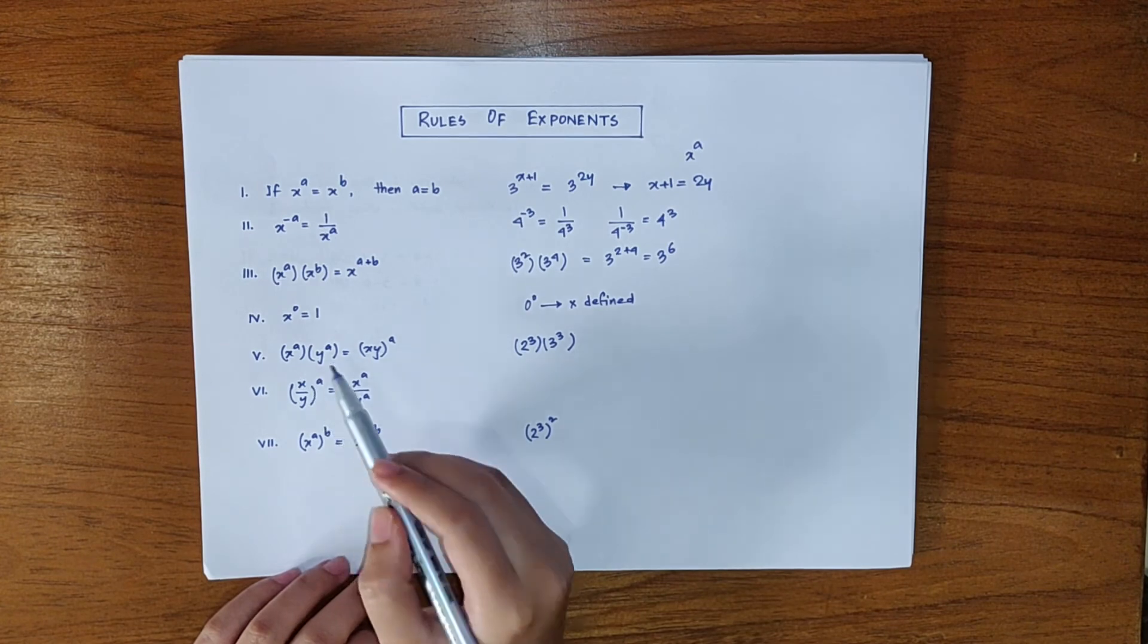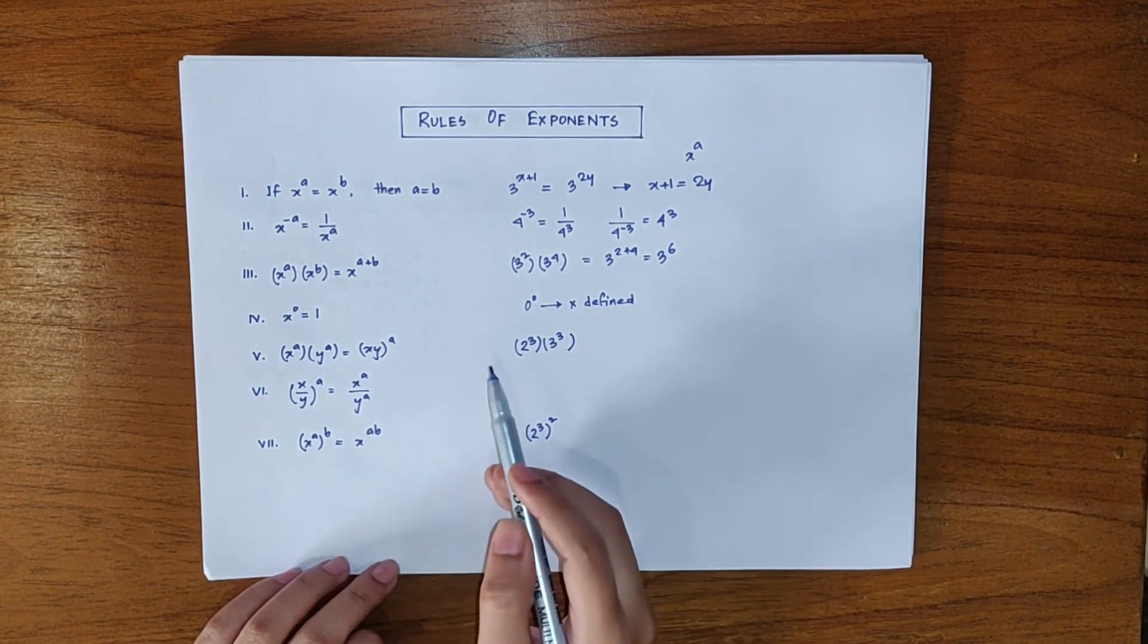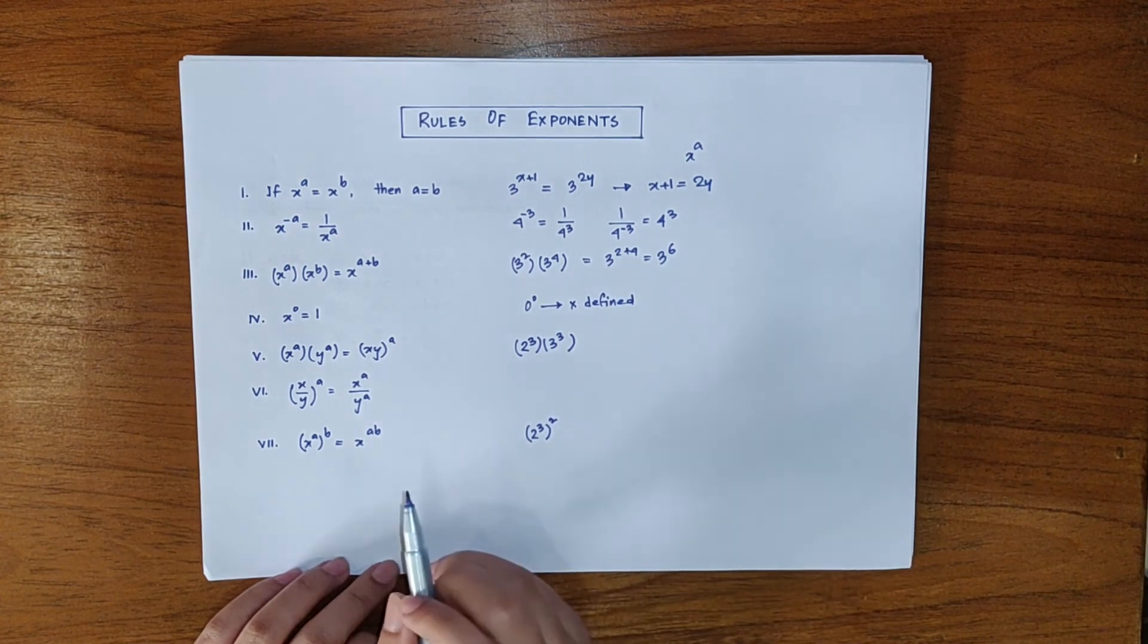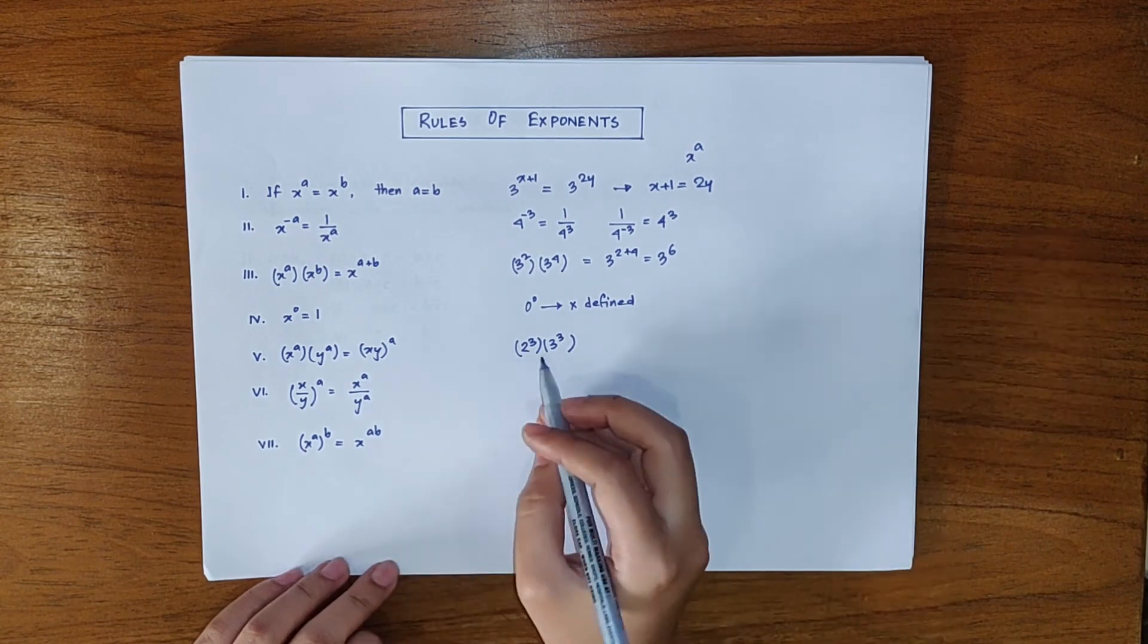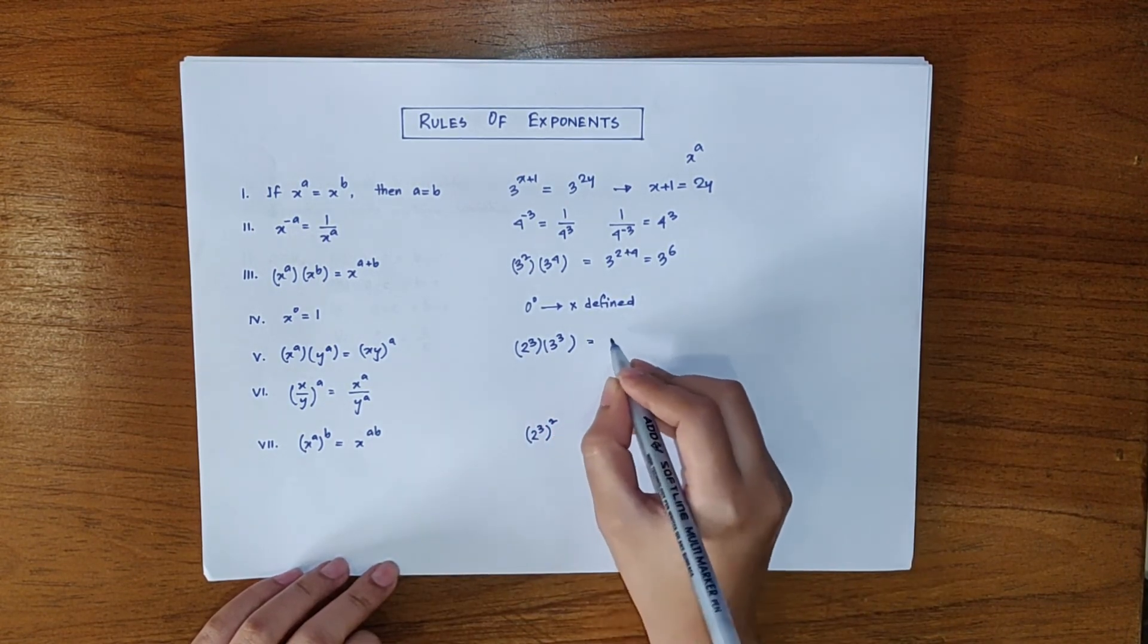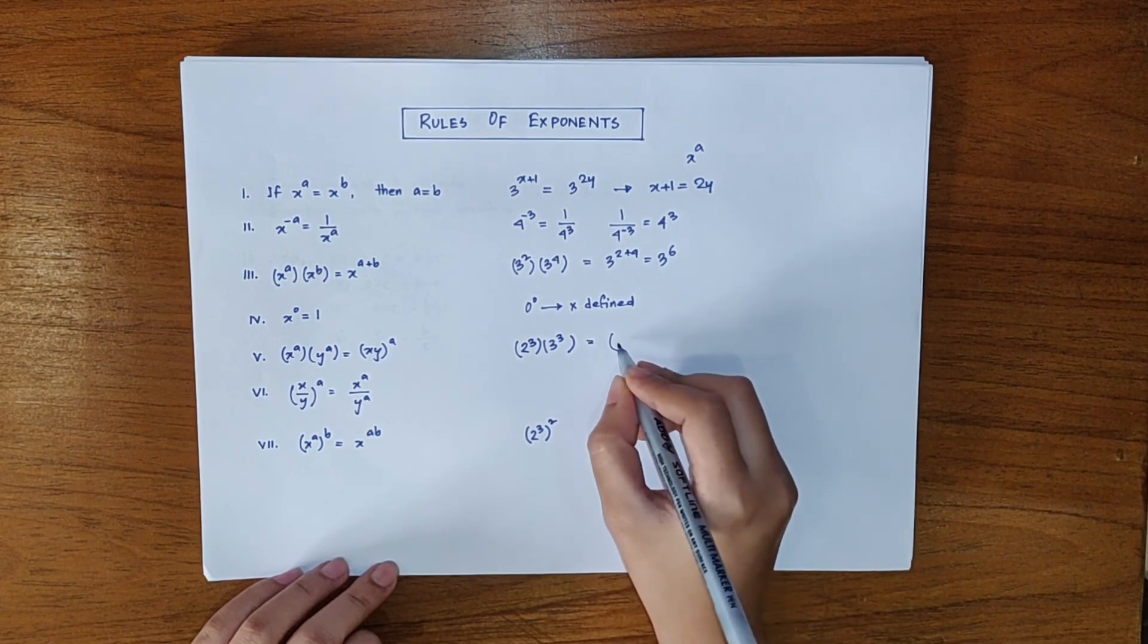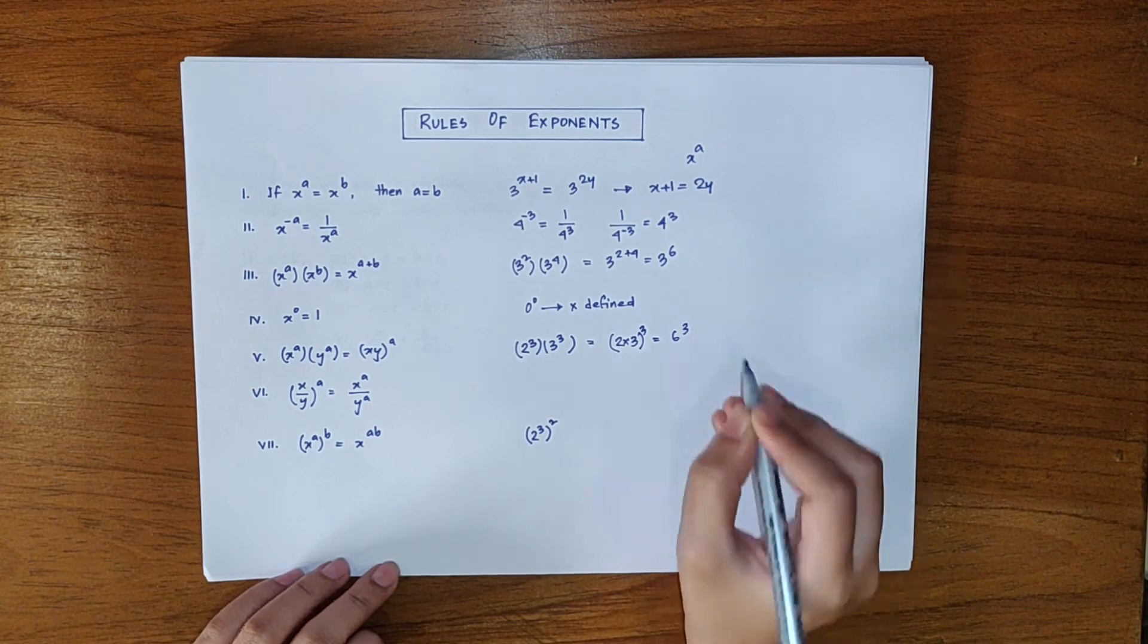X to the power a into y to the power a is equal to xy to the power a. Now if two numbers with the same power are multiplied they can be written like this. We have 2 cube multiplied with 3 cube which can be written as 6 cube.